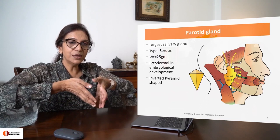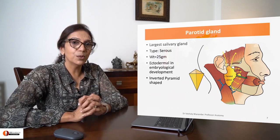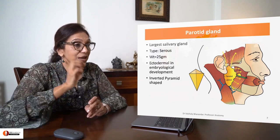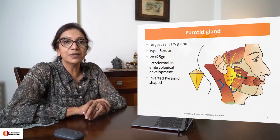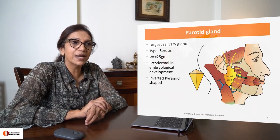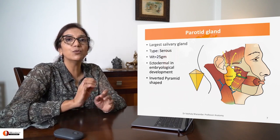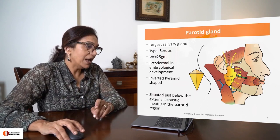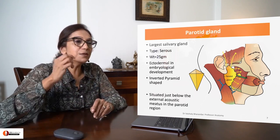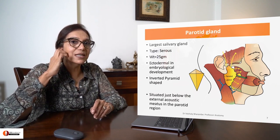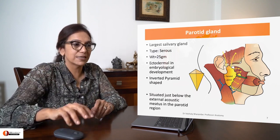It is shaped like an inverted pyramid — don't forget this. This is a very important aspect of the parotid gland. It's shaped like an inverted pyramid and situated just below your external acoustic meatus.